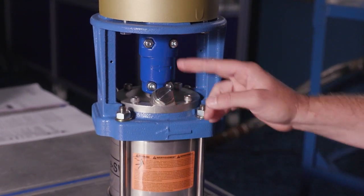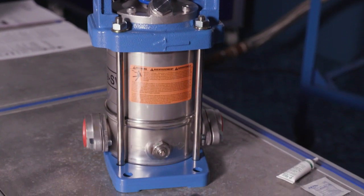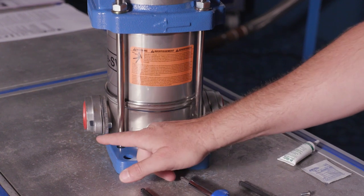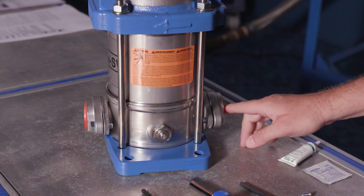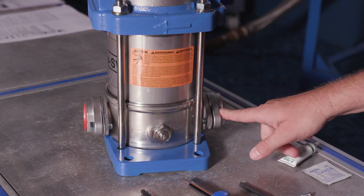We want to make sure that the rotation is following the arrow. Notice these two are the same rotation. This arrow here is flow. We can see here that on the left is my input and on the right is my discharge, or suction and discharge on the right.